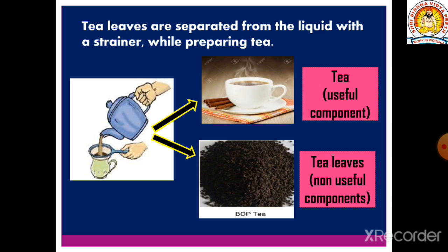Why do we do that? Because tea is a useful component. This is the first example where the tea leaves are separated from the liquid with a strainer while preparing tea.